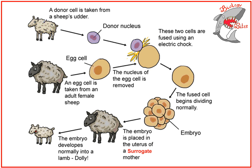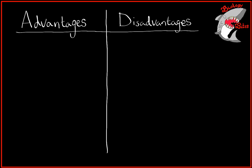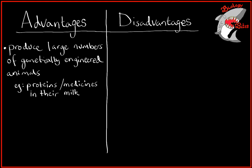It's finally worth pointing out some of the advantages and disadvantages to this technique. The first advantage that springs to mind is that you can produce large numbers of genetically engineered animals that can produce proteins or perhaps medicines in their milk, and these could be used to treat humans with various diseases. We also could reverse extinction, which might be a good idea for some organisms, and equally we could clone pets—or is that really a good idea?